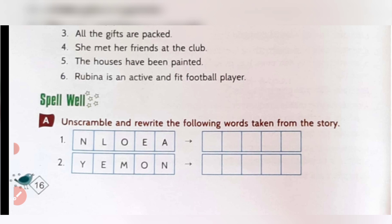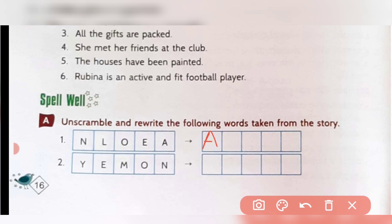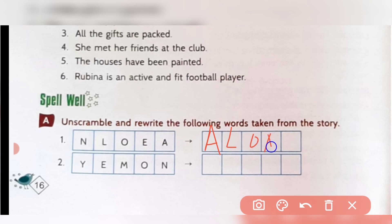Now spell well, question A: unscramble and rewrite the following words from the story. The letters are not in proper order — arrange them to make a meaningful word. First: N-L-O-E-A — rearranged gives 'alone' (A-L-O-N-E). Second: Y-E-M-O-N — rearranged gives 'money' (M-O-N-E-Y).